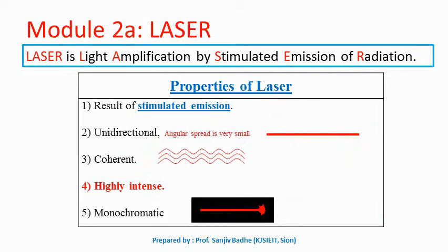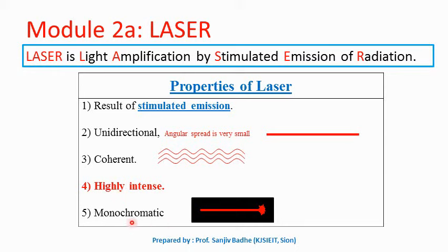These are the properties of laser. Laser is light amplification by stimulated emission of radiation, so it is obtained due to stimulated emission. Laser beam is unidirectional, travels in a single direction, and angular spread is very small so divergence is very less — it can travel long distances. Laser beam is coherent, so the light waves maintain the same phase relationship. It is highly intense because the beam is very narrow and the density of photons is very high. Laser light is monochromatic, characterized by only one wavelength.